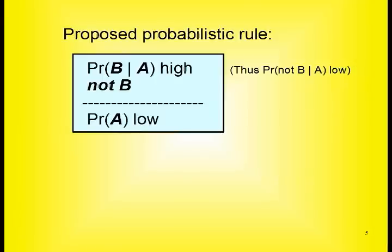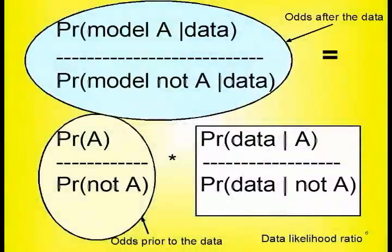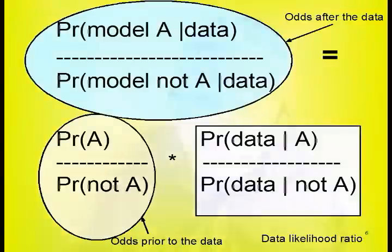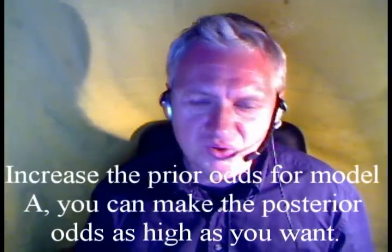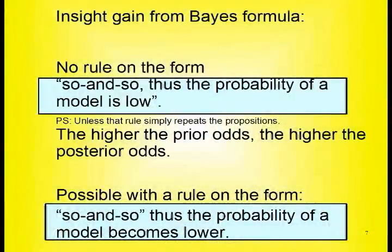So here's the proposed rule: the probability of B given A is high, so the probability of not-B given A is low. B is then shown to be false — that means A is probably false. Well, that's simply not the case, and here's why. Here's Bayes' formula in probability ratio or odds form. The odds after the data is the prior odds times the data likelihood ratio — the probability of the data given model A, divided by the probability of the data given not-A. What this formula says is that the outcome will depend on the prior probability of the model: the higher the prior, the higher the posterior probability of the model. So there can't be a probabilistic rule that concludes the probability of A is low — rather it needs to be on the form: so-and-so, thus A becomes less probable.